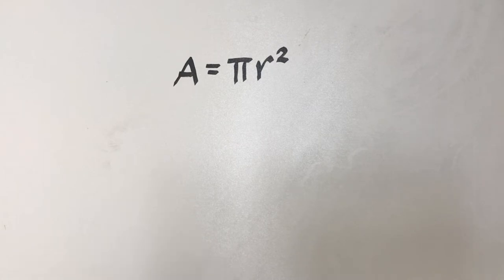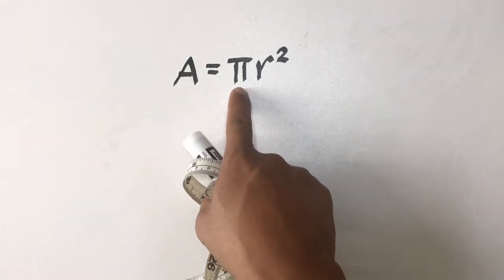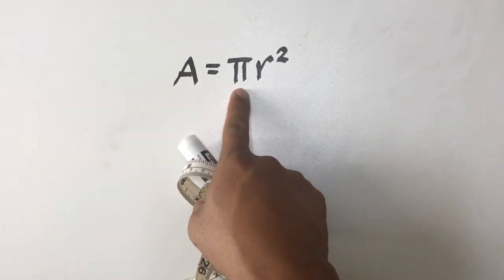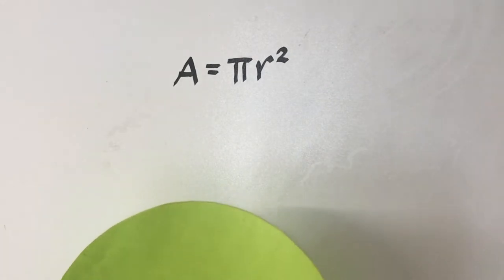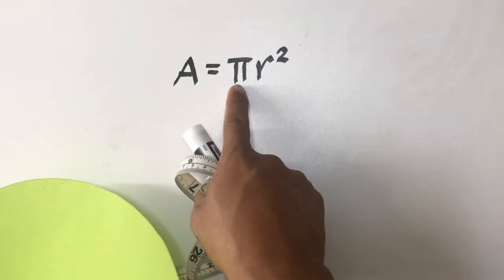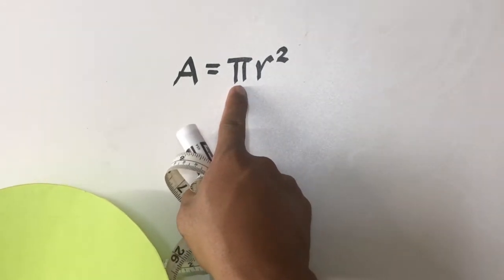But before we can derive the formula for the area of a circle, we need to understand first what is the meaning of this π and where does it come from. So we have here some activities to understand inductively the value of π.